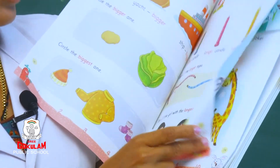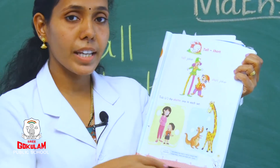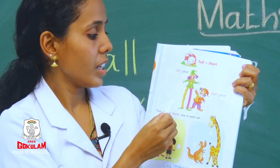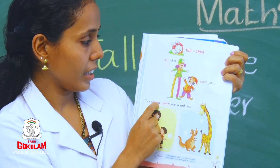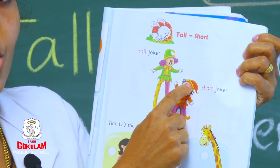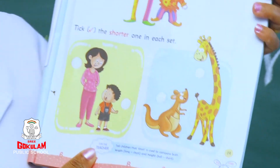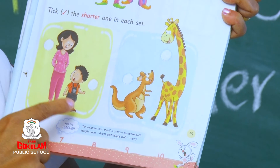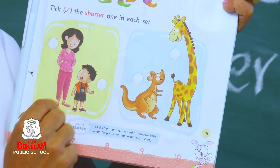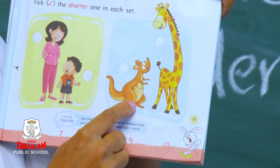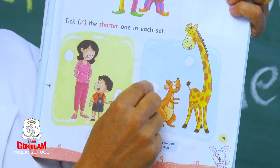You can take the next page — page number 18: tall and short. Tall means the one with more length. See the jokers — how funny they are. There are two jokers; one is tall and the other is short. Tick the shorter one in each set. Mama and boy — which one is shorter? Yes, the boy is shorter. Put a tick mark here. Then a kangaroo and giraffe — which one is shorter? Yes, this one. Put a tick mark here.